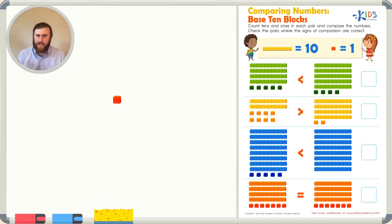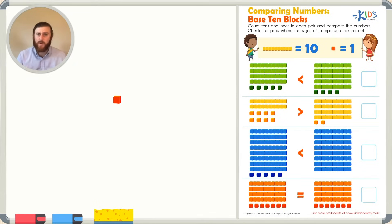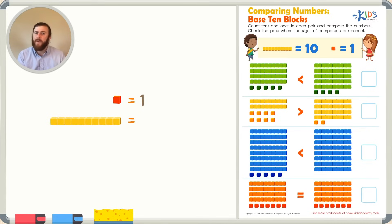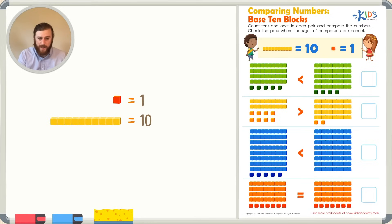First, which base 10 block do you see? This is a cube. Do you know the value of the cube? A cube is worth just one. How about a long? Do you know how much the long is worth? The long is made up of 10 individual cubes and therefore the long is worth 10. Let's use this information to help us compare numbers with base 10 blocks.